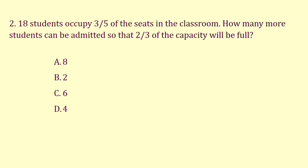18 students occupy 3/5 of the seats in the classroom. How many more students can be admitted so that 2/3 of the capacity will be full? Let the number of seats in the classroom be n. Given that 3/5 of the seats are occupied by 18 students, so 3/5 of n equals 18. Therefore n equals 18 into 5 divided by 3, which equals 30.